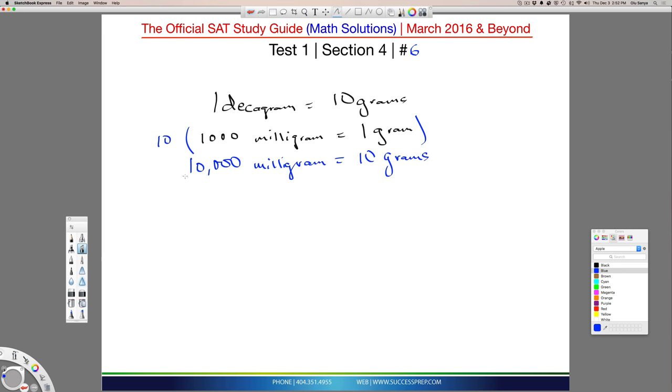So I can write this all as one line. So watch what happens here. I can now say, let's make that black, I can now say one decagram is equal to 10 grams, which is exactly what we have here.